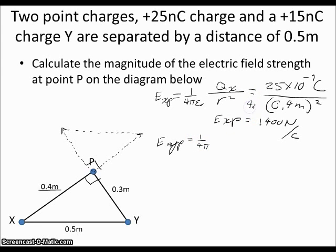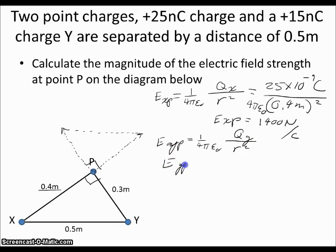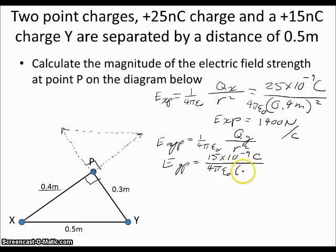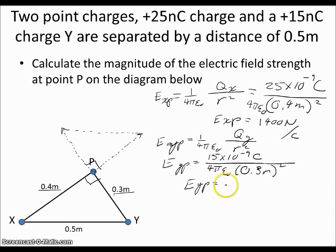For E_Y acting on P, we use 1 over 4π epsilon-naught times q_Y over distance squared. The charge of Y is 15 nanocoulombs, or 15×10⁻⁹ coulombs, and the distance from Y to point P is 0.3 meters. Multiplying this out gives an electric field strength from Y of 1500 newtons per coulomb.